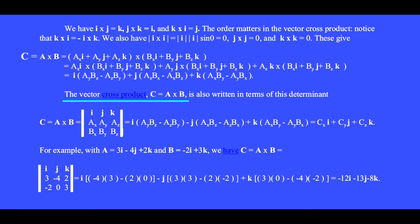The vector cross product C equals A cross B is also written in terms of a determinant, where we list I, J, K in the first row, the X, Y, and Z components of vector A in the second row, and the X, Y, and Z components of vector B in the third row.